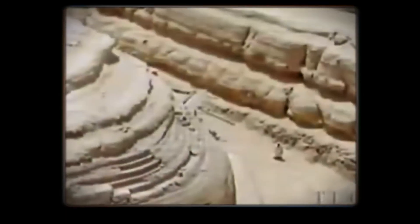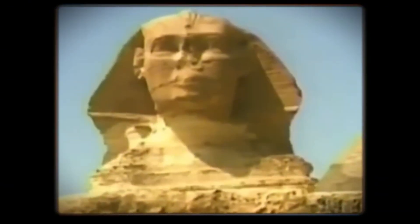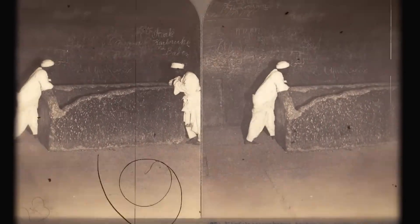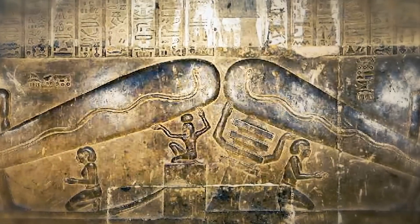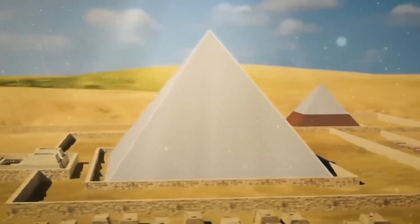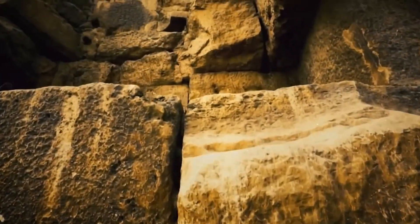The building materials came from different places. Most of the limestone blocks used for the body of the pyramid were taken from quarries nearby. The finer white limestone that once covered the outer surface came from Tura, across the Nile River. The granite blocks used in the inner chambers came from Aswan, about 800 kilometers to the south.